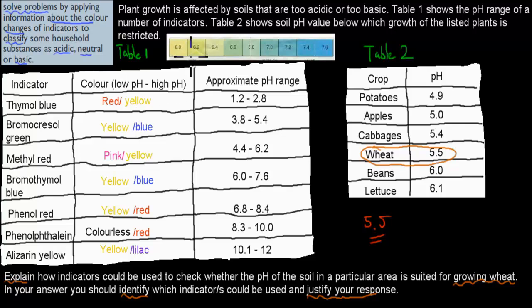We have bromothymol blue, which is this indicator right there. And as you can see, when it says low pH, it has a color yellow. And high pH, it has a color blue. And its approximate pH range is 6 to 7.6. So what that means is if it has a lower pH than 6, so lower than 6, it's going to be yellow.